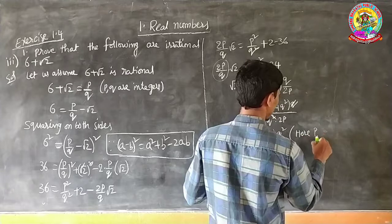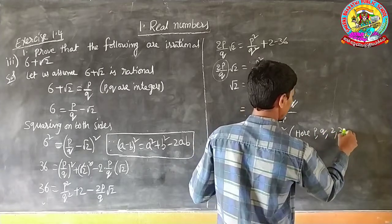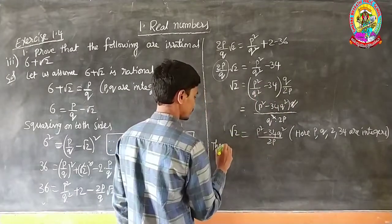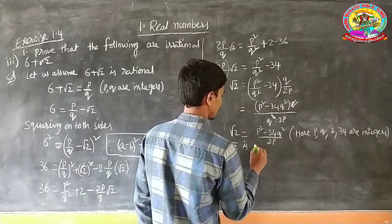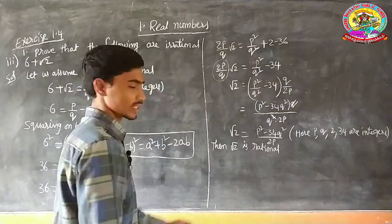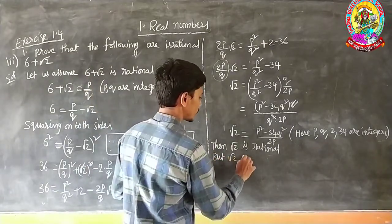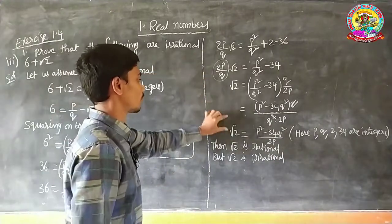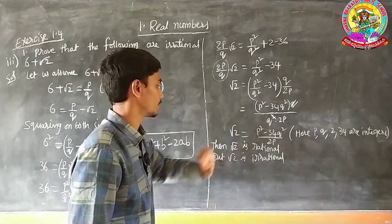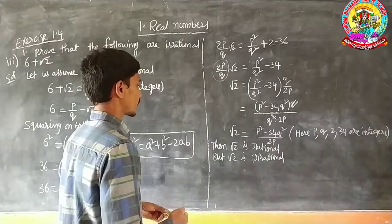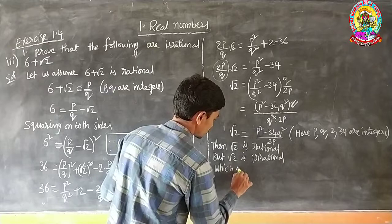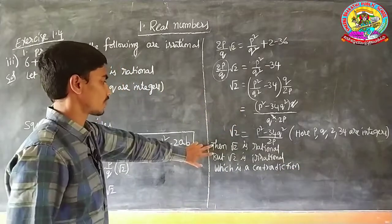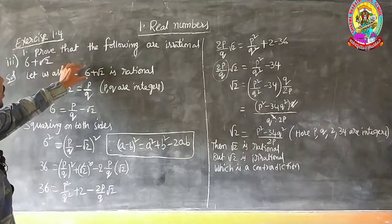Here P, Q, 2, and 34 are all integers. Since the right side is expressible as a ratio of integers, root 2 would be rational. But root 2 is actually irrational — which is a contradiction. This contradiction arose because our assumption that 6 plus root 2 is rational is wrong.